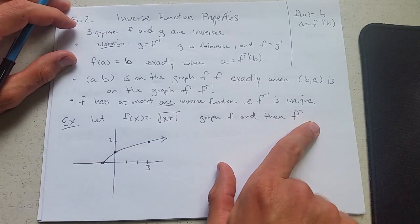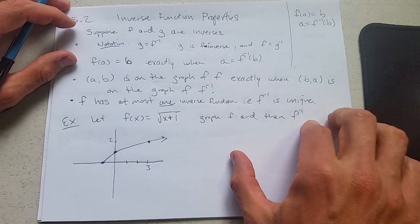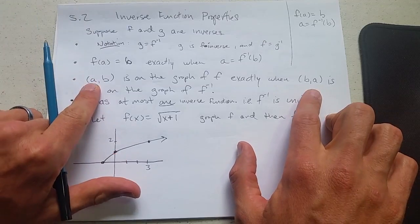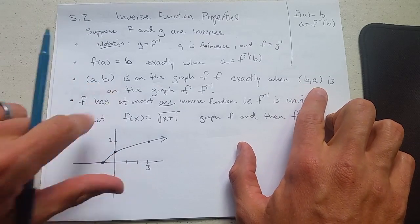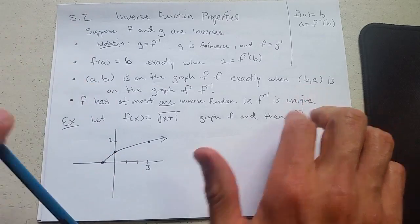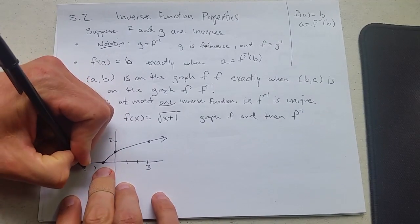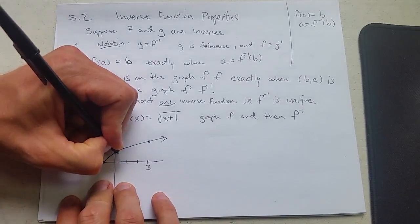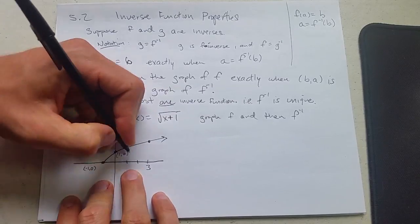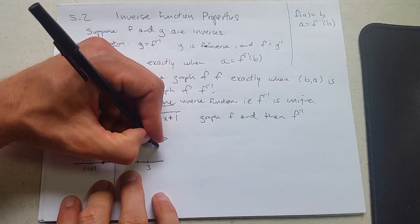What we're going to do is graph f inverse. We're going to use this rule: this point's on the graph when this point's on the graph. So I'm going to write out the points. We have negative 1, 0, 0, 1, and 3, 2.